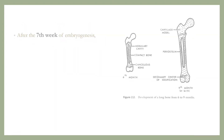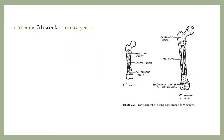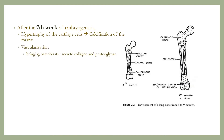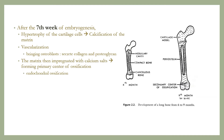After the seventh week of embryogenesis, hypertrophy of the cartilage cells occurs, resulting in the calcification of the matrix. The vascular connective tissue then grows into the central area of that cartilage, bringing osteoblasts that secrete collagen and proteoglycans into the matrix. The matrix is then impregnated with calcium salts, thereby forming the primary center of ossification.